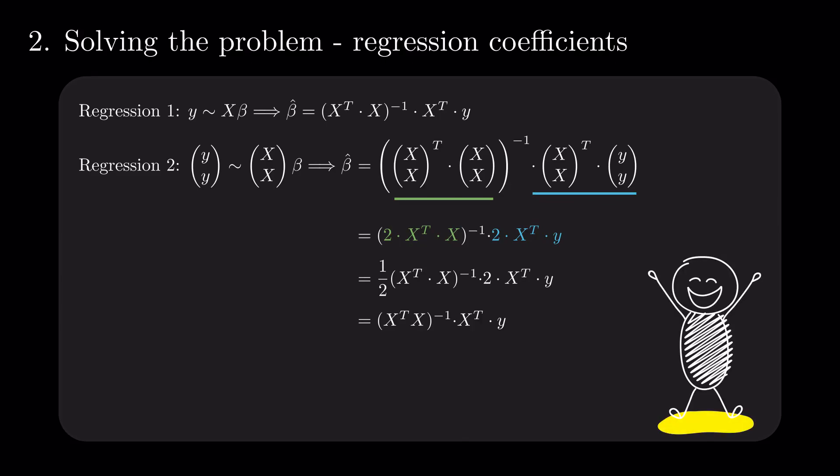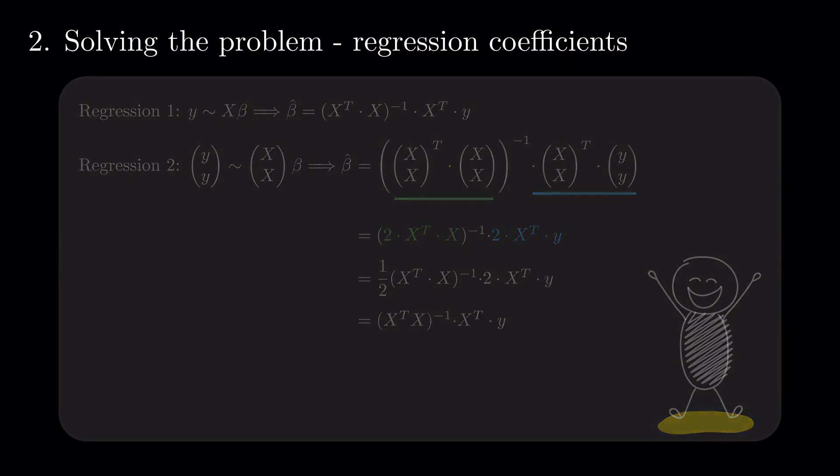As we intuited when looking at the drawing, the estimators do not change. There is no new information added. Nevertheless, are they better at estimating the values of y? Can they even be, given that we add no additional information? Is the change in sample size enough to have an impact here?